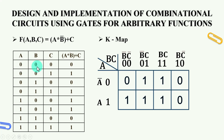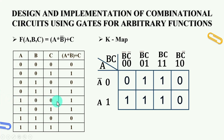First, A=0, B=0, C=0, value is 0. Next is 0,0,1 which gives 1. Next is 0,1,0 which gives 0. Next is 0,1,1 which gives 1. Next is 1,0,0 which gives 1. Next is 1,0,1 which gives 1. Next is 1,1,0 which gives 0. Next is 1,1,1 which gives 1.